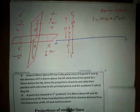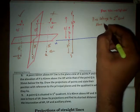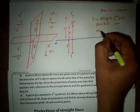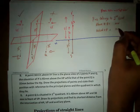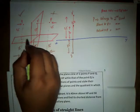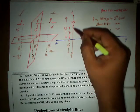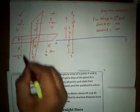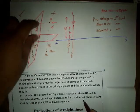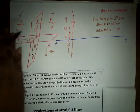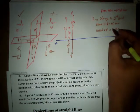Point P belongs to the second quadrant. According to the second quadrant, the point is above HP and behind VP. Above HP equals 45mm, and the distance from XY reference line to P is 30mm, so behind VP equals 30mm. Therefore, P is in the second quadrant: above HP 45mm and behind VP 30mm.